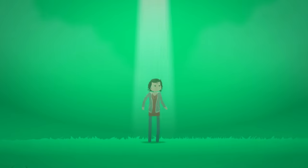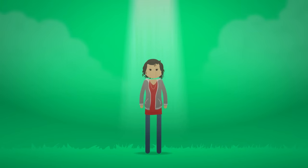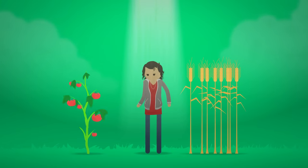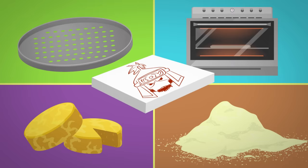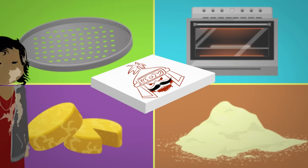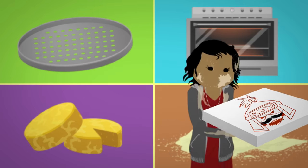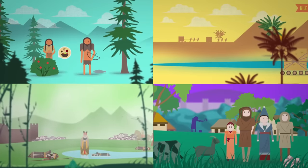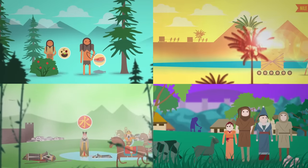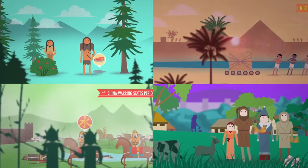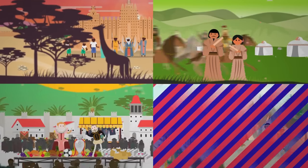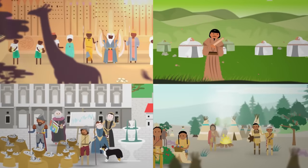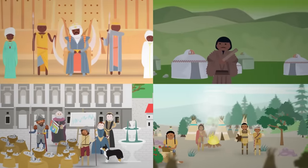Imagine what it would be like to make a pizza completely on your own from scratch. You would have to grow the wheat and tomatoes and raise the cow. You would make the flour, the cheese, the oven, the pan, and then draw the mustache guy on the box. Without specialization, if you want something, you have to make it yourself. And for thousands of years of human history, specialization was pretty minimal. Of course, humans specialized prior to the industrial revolution — it's one of the marks of civilization — but the modern era has taken this to the extreme.